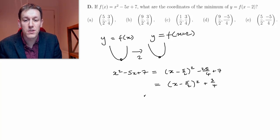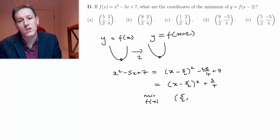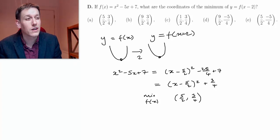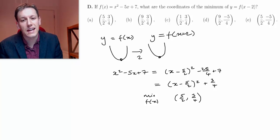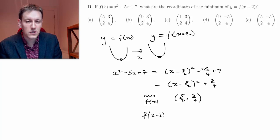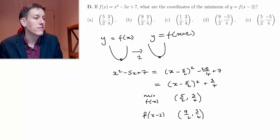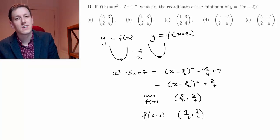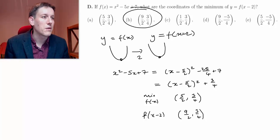So the minimum of f of x is at 5 over 2, 3 over 4. You should be able to do that quickly from your A-level studies. And then for f of x minus 2, I just need to add 2 to the x coordinate, so that's 4 over 2 that I'm adding, so I'm going to get to 9 over 2, 3 over 4. Now I have a look and see is that one of the answers. Yes it is, B, so I'm happy with that.